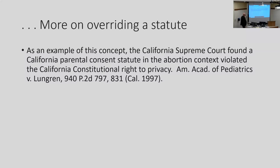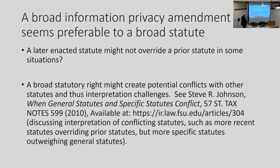There are roughly 11 states that have a constitutional privacy right. In California, a parental consent statute in the abortion context was found to violate California's constitutional right of privacy — the court basically overriding a statute with a constitutional amendment. A broad information privacy amendment seems preferable to a broad statute. It's harder to pass, but it would work better functionally. A later-enacted statute might not override a prior statute in some situations — you run into statutory interpretation problems where more specific statutes outweigh general statutes. An amendment would be cleaner.